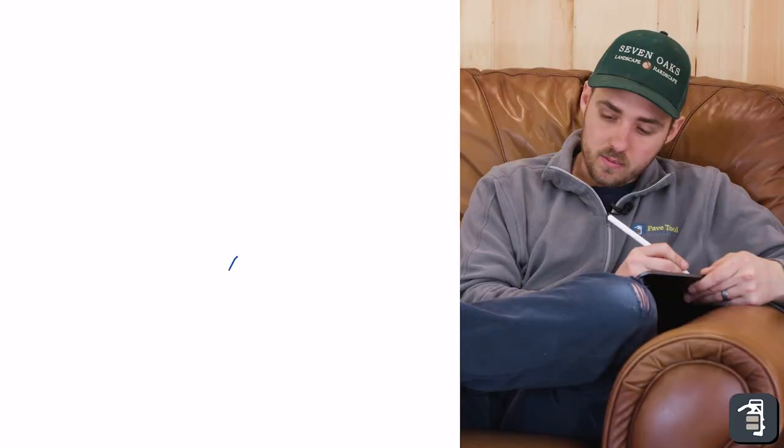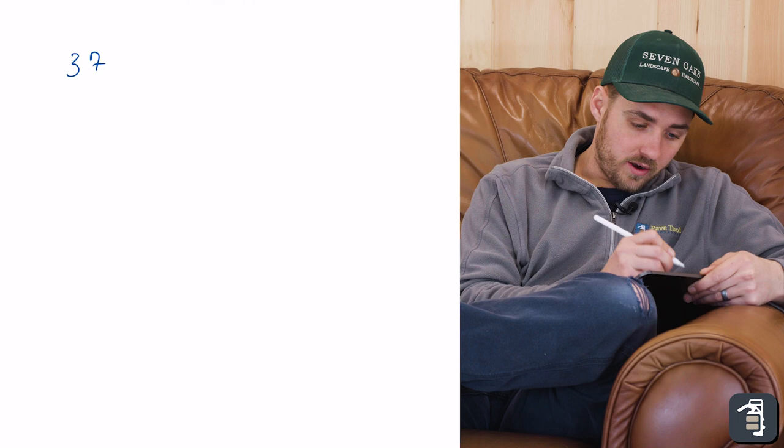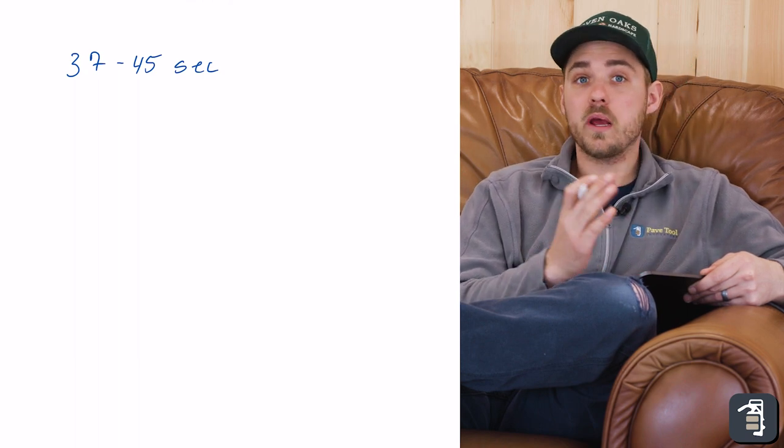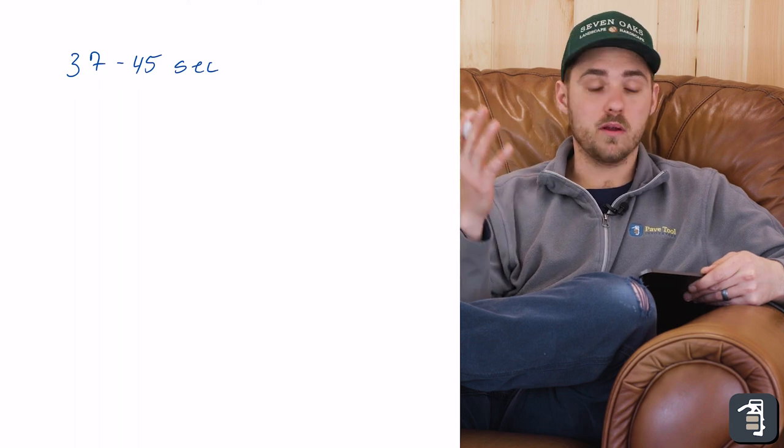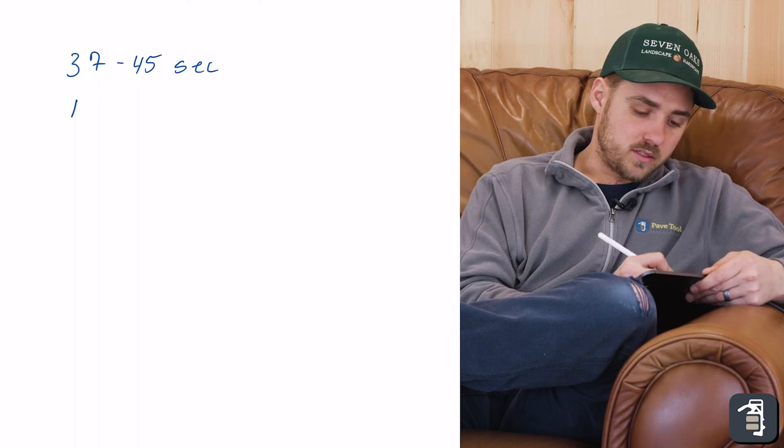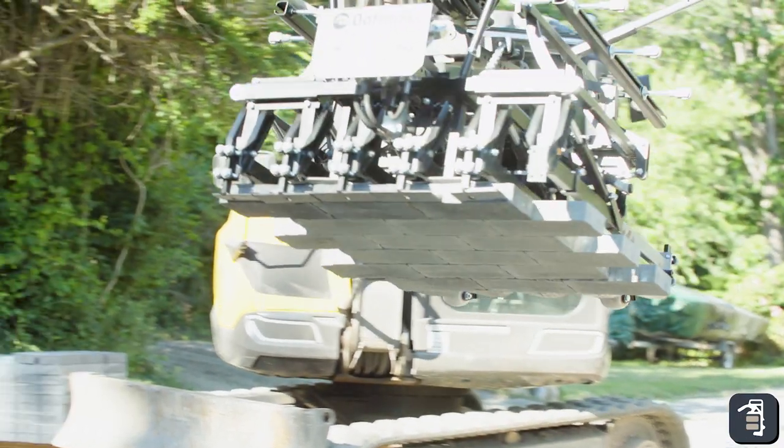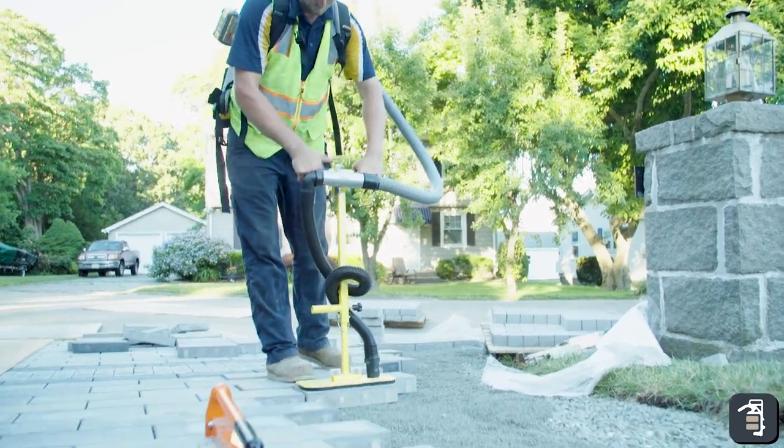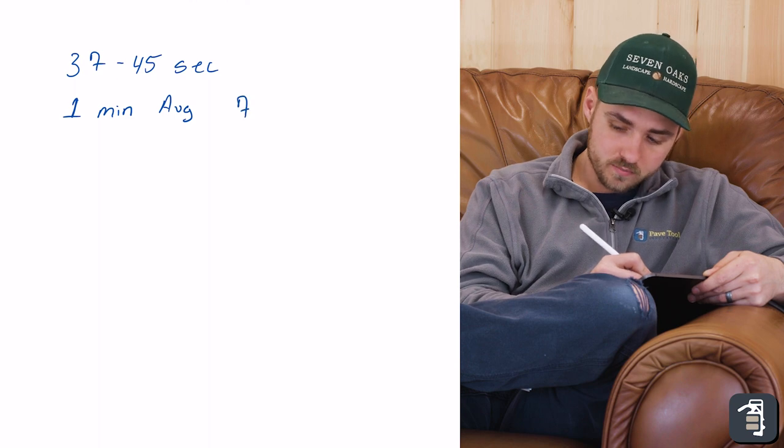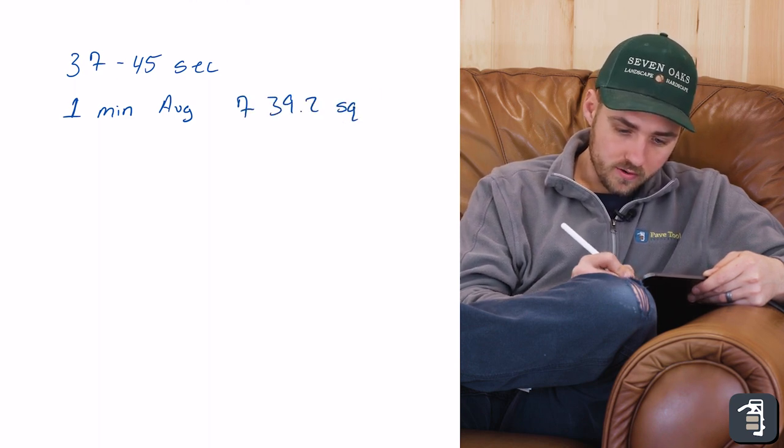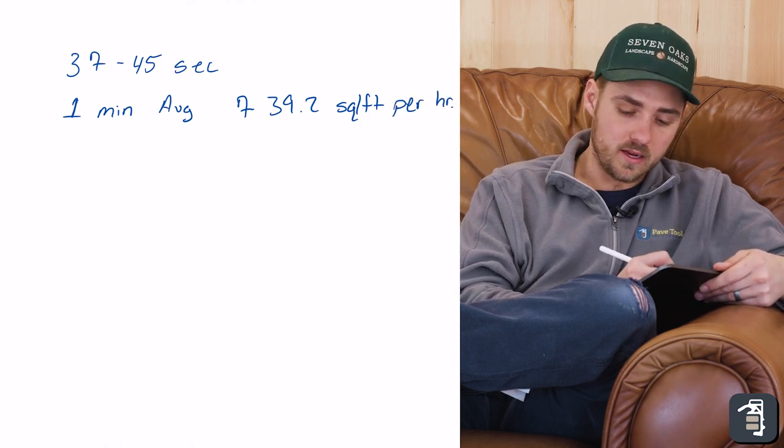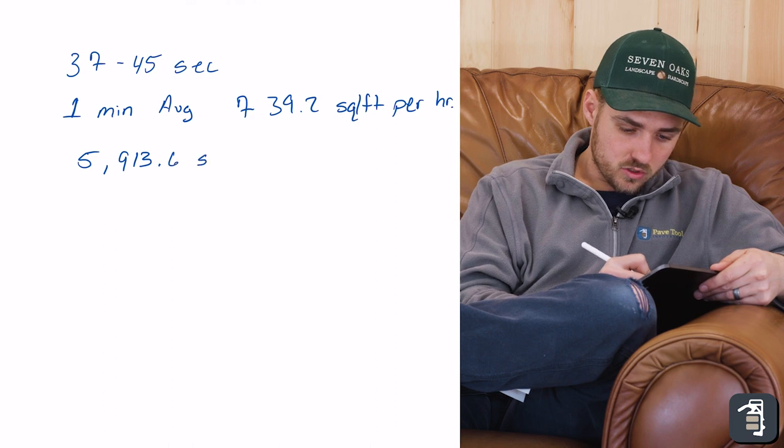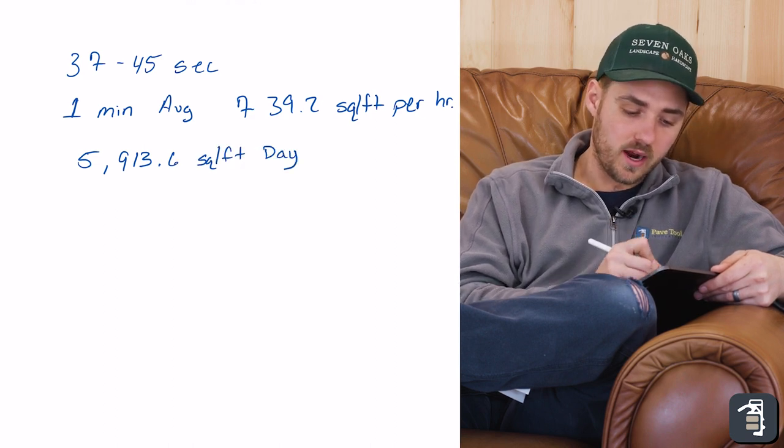So with that you're going to be able to average a layer of pavers in 37 to 45 seconds, which is actually pretty incredible. So a layer of pavers can be anywhere from 10 square feet to I've seen pavers as big as 16 square feet per layer. Let's average that at one minute average, and that is grabbing the pavers, side shifting them, putting them right in place and moving the pieces that need to be moved with a backpack setup. One minute equates to 739.2 square feet per hour. Now if we take that and we times that by an eight hour day, you're going to end up with 5,913.6 square feet a day.